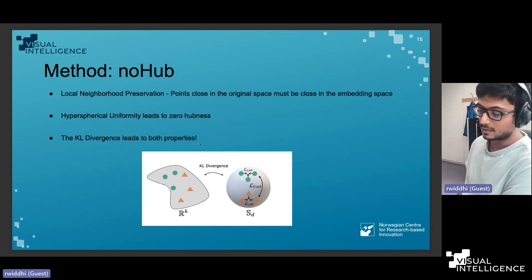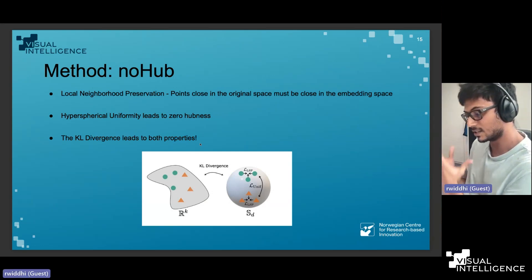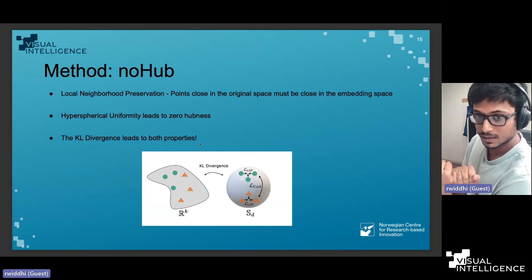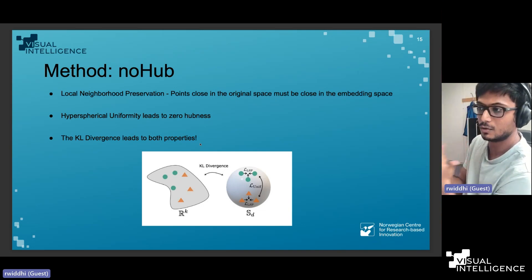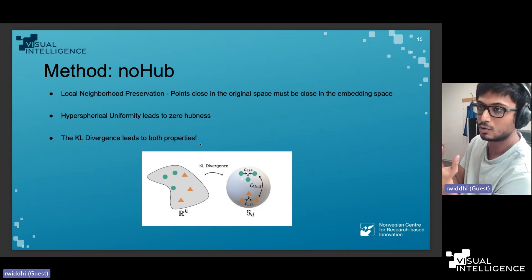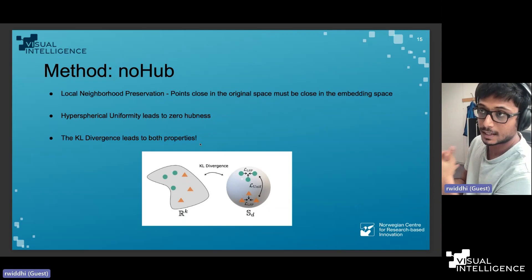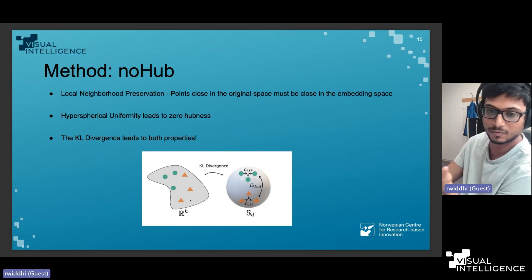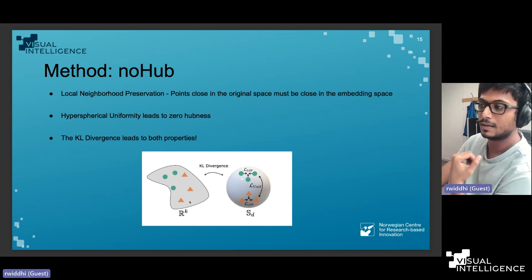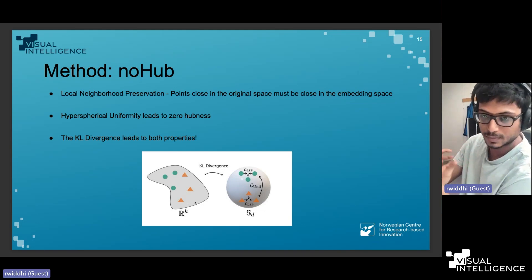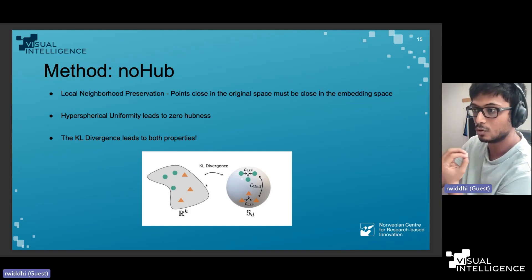That leads us to the method. We have clues as to how to design a new embedding space that gives us zero hubness while also giving good performance. To achieve both, we need two important properties: hyperspherical uniformity, and local neighborhood preservation — meaning that given your input data space and projecting to the hypersphere, local neighborhoods must be preserved.